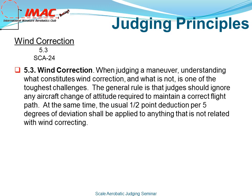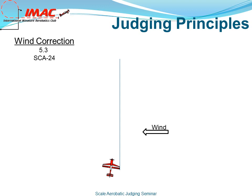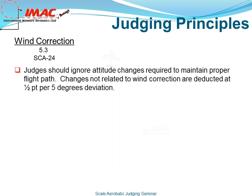Rule 5.3 — Wind Correction. When judging a maneuver, understanding what constitutes wind correction and what does not is one of the toughest challenges. The general rule is that judges should ignore any aircraft change of attitude required to maintain a correct flight path. At the same time, the usual half-point deduction per 5 degrees of deviation shall be applied to anything not related to wind correcting. In this illustration, we see the yaw attitude being used to maintain a perfect vertical upline. Judges should ignore attitude changes required to maintain proper flight path, and changes not related to wind correction are deducted at a half a point per 5 degrees of deviation.